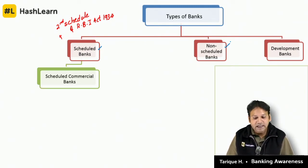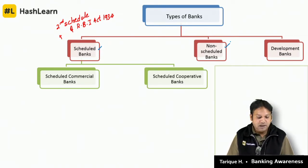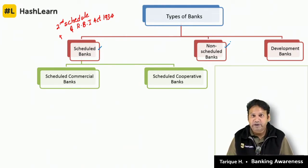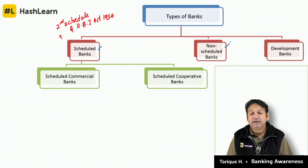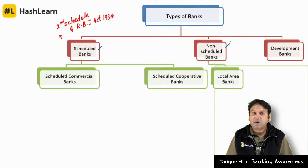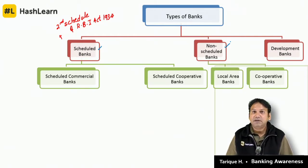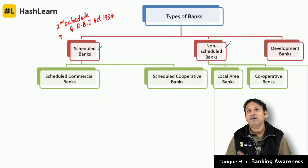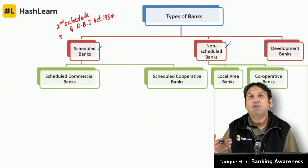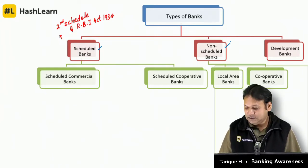If you look at scheduled banks, these are of two types: scheduled commercial banks and scheduled cooperative banks. Similarly, non-scheduled banks also have two types: commercial banks and cooperative banks. The non-scheduled commercial banks are called local area banks. Right now there are only three local area banks in India, and we will see their names in the slides.